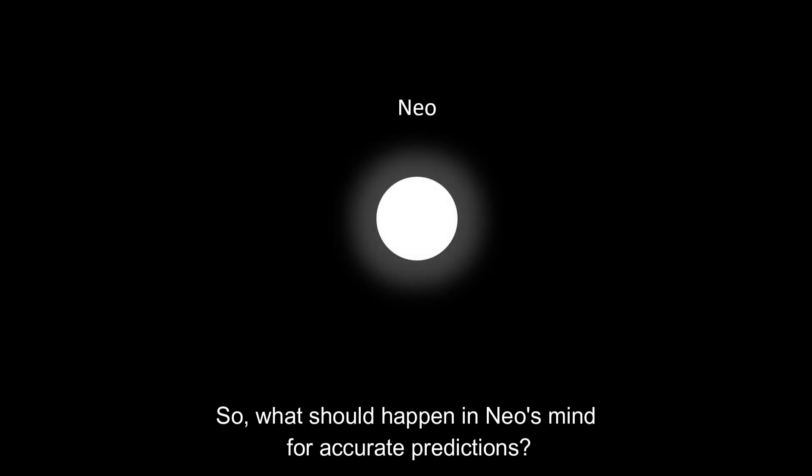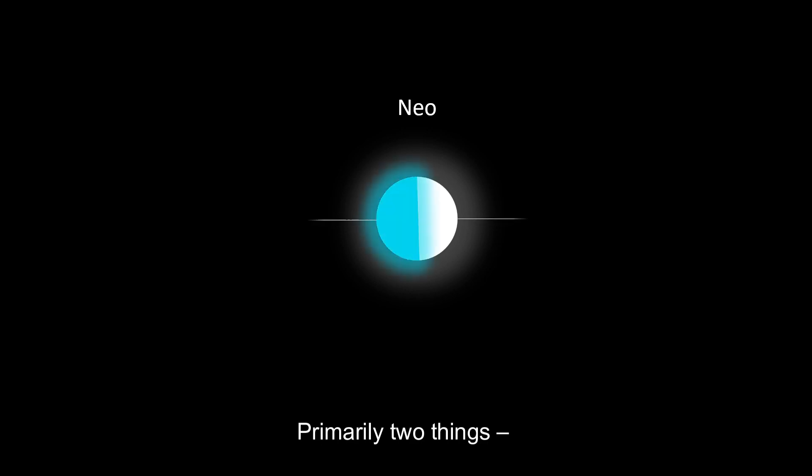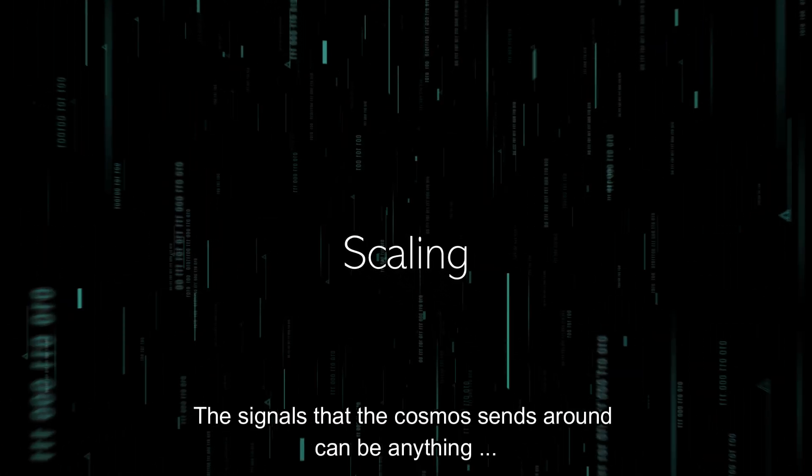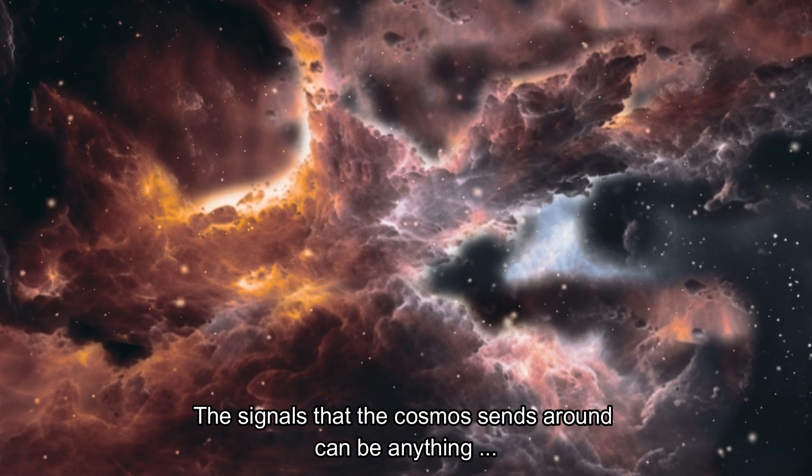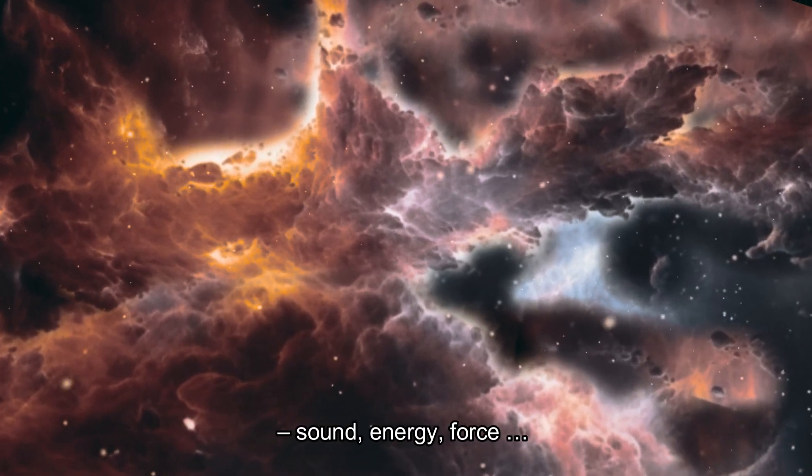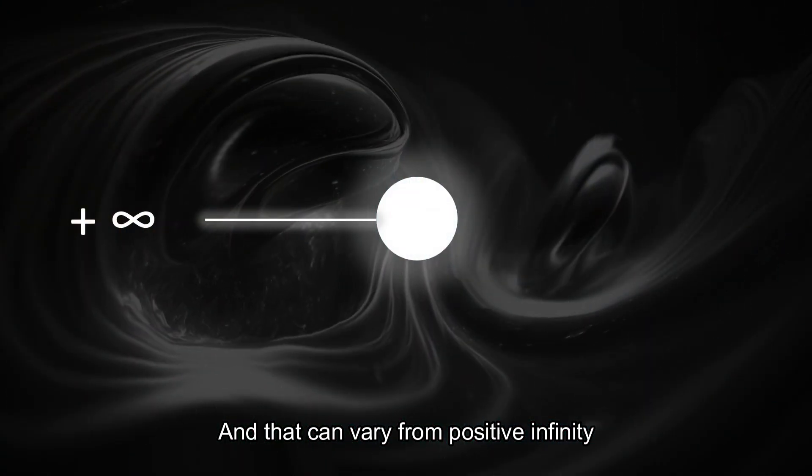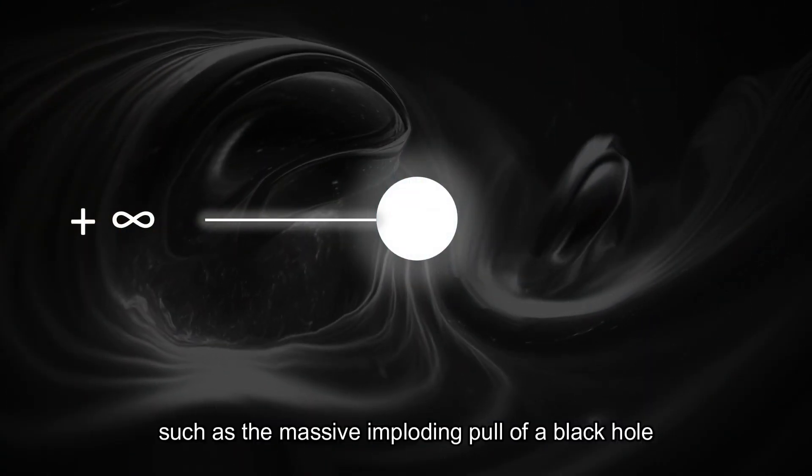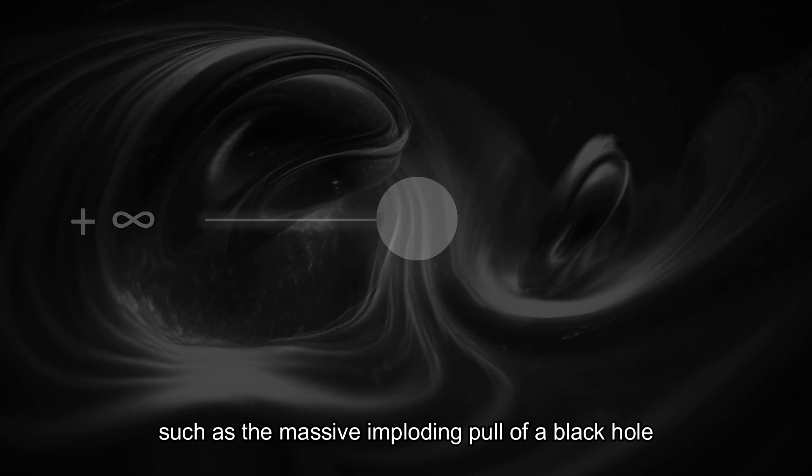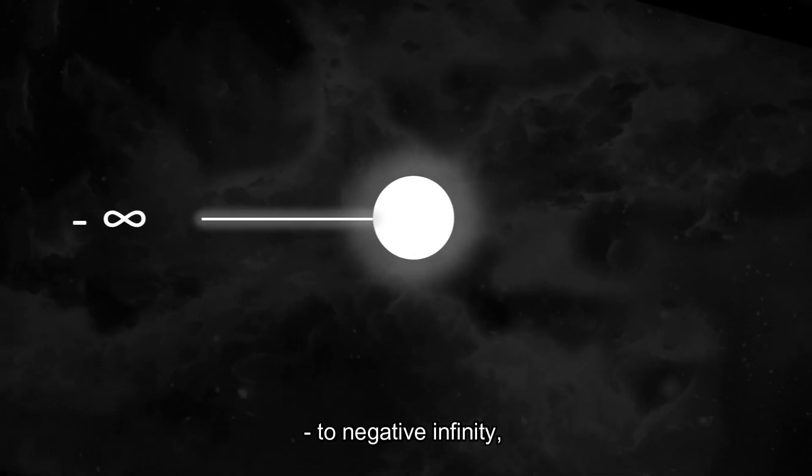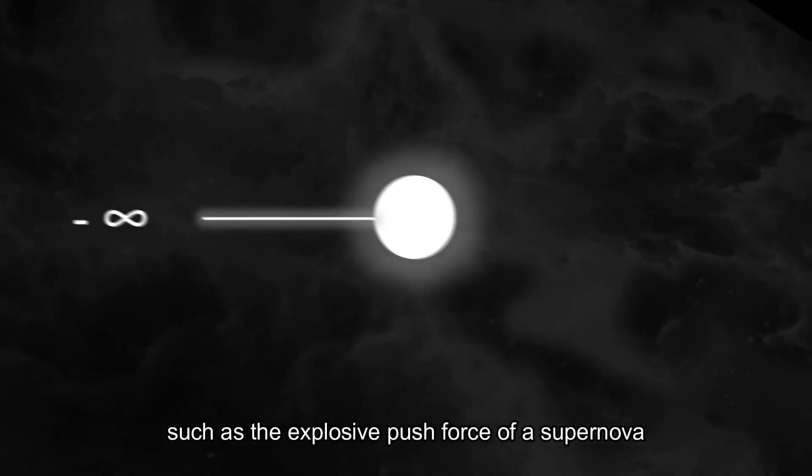So what should happen in Neo's mind for accurate predictions? Primarily, two things: weighing and scaling. Proceeding first with scaling. The signals that the cosmos sends around can be anything: sound, energy, force. And that can vary from positive infinity, such as the massive imploding pull of a black hole, to negative infinity, such as the explosive push force of a supernova.